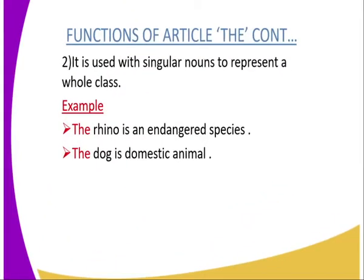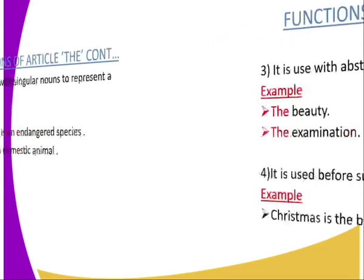We can also have another use of the article 'the': it is used with singular nouns to represent a whole class. For example, 'The rhino is an endangered species.' 'The dog is a domestic animal.' The singular noun in the first example is 'the rhino', and in the second example it is 'the dog'.